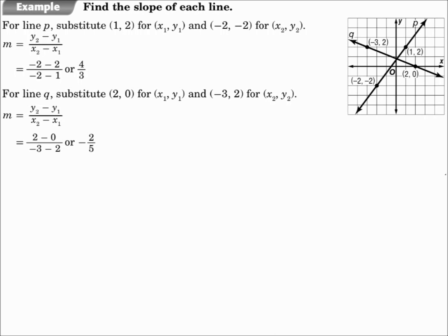Find the slope of each line. For line p, the point (1, 2) is your x1, y1, and the point (−2, −2) is your x2, y2. So in the formula, y2 minus y1 will be negative 2 minus 2, and x2 minus x1 will be negative 2 minus 1. That's negative 4 over negative 3, which is 4 thirds. Leave your answer improper — don't make it a decimal, keep it as a fraction.